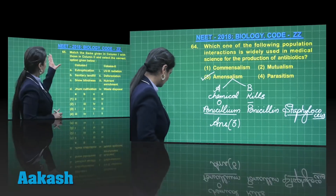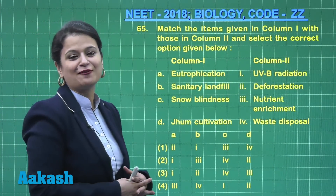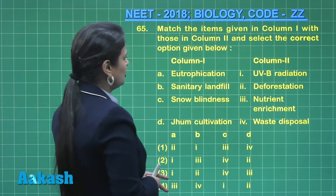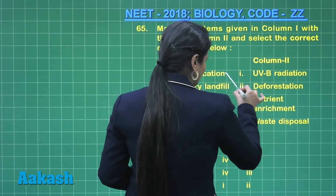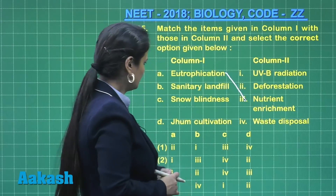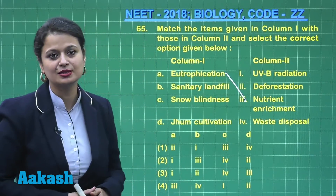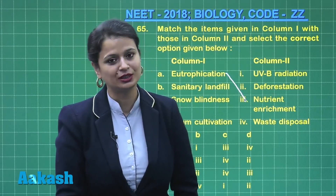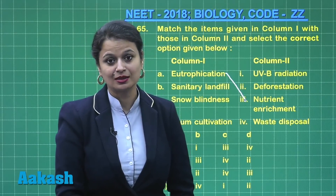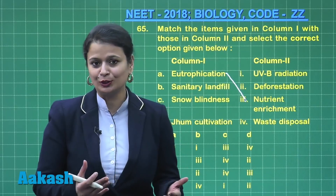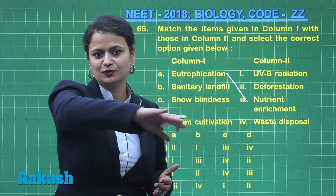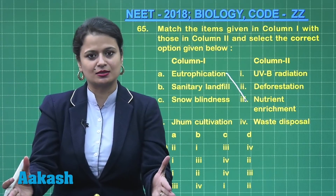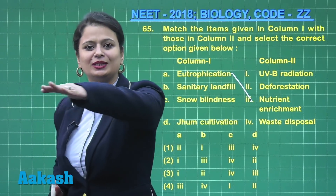Now let's move on to question number 65, where we have to match column 1 and column 2. Eutrophication means nutrient enrichment of a water body. Sanitary landfills are for the disposal of biodegradable waste — a pit is formed, biodegradable waste is dumped into it, and then it is covered with soil.